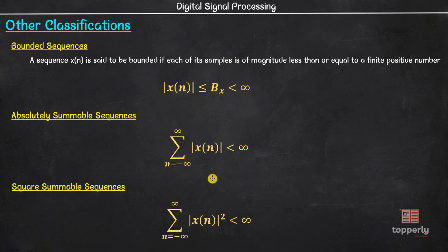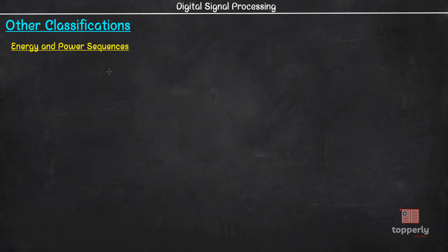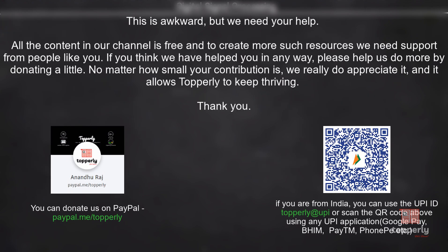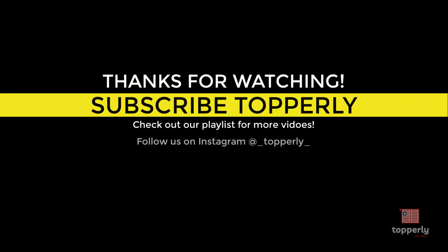These three are mathematical definitions. There is one more type of classification: energy and power sequences, which we will learn about in the coming lectures. To summarize, we learned about odd and even sequences, periodic and aperiodic sequences, bounded and unbounded sequences, absolutely summable sequences, square summable sequences, and energy and power sequences. If you have any doubts, feel free to ask in the comments. If you found this lecture useful, please like the video and subscribe. In the next video we will learn about the definition of energy and power for a signal.